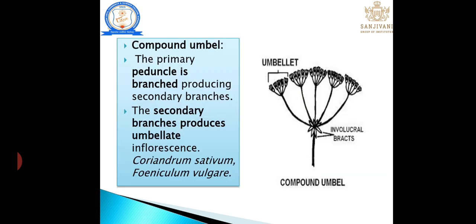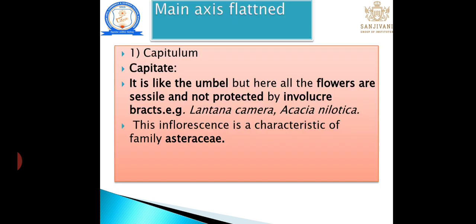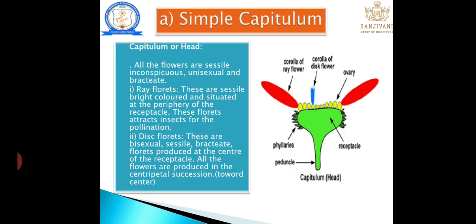Compound umbel: similar to simple umbel, but the peduncle produces secondary branches, and those secondary branches produce the flowers. Main axis flattened — capitulum: it is like the umbel inflorescence but not protected by involucre bracts. Capitulum is a key characteristic of the Asteraceae family, while umbel is a key characteristic of the Apiaceae (Umbelliferae) family. Classified into simple and compound capitulum.